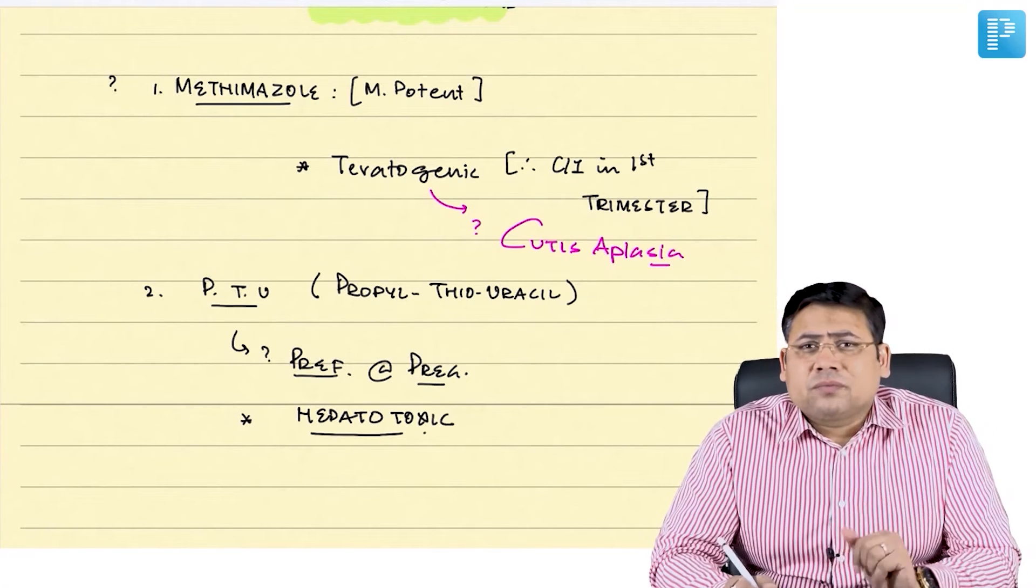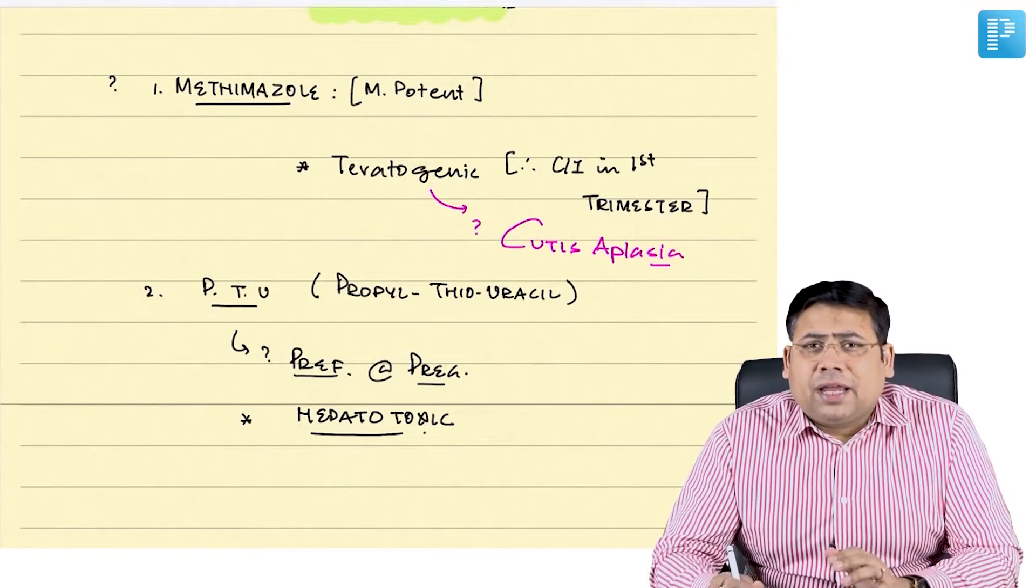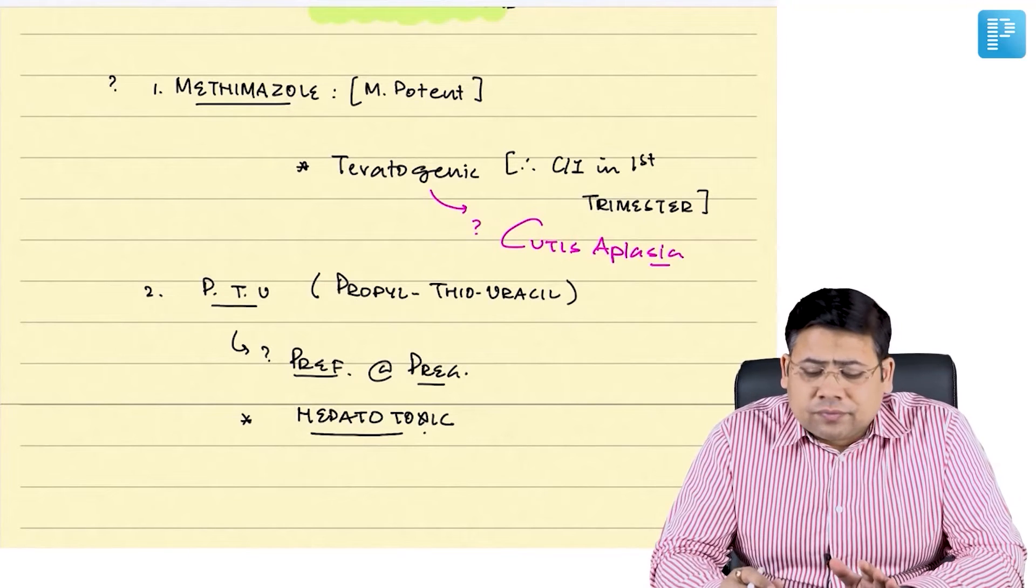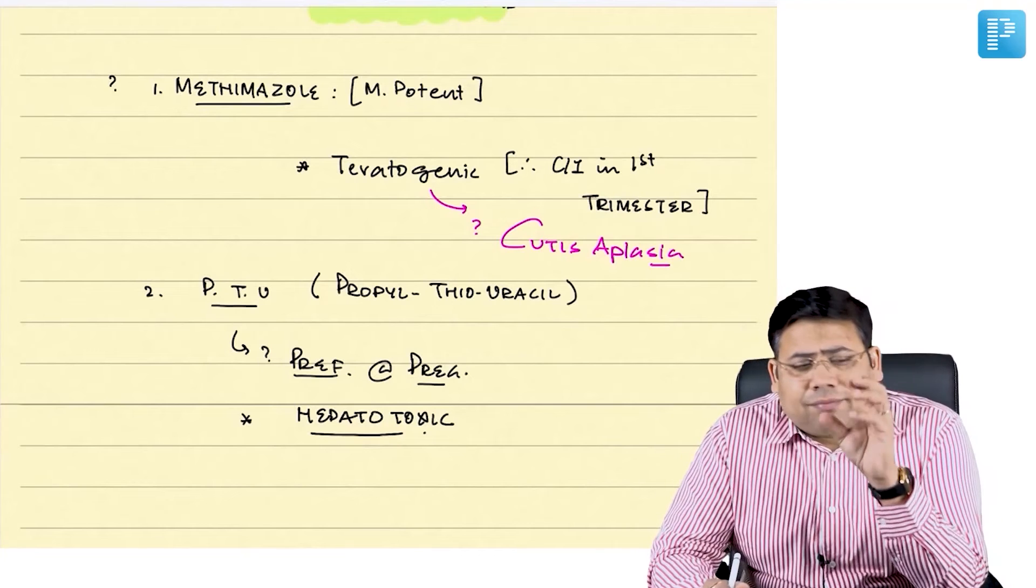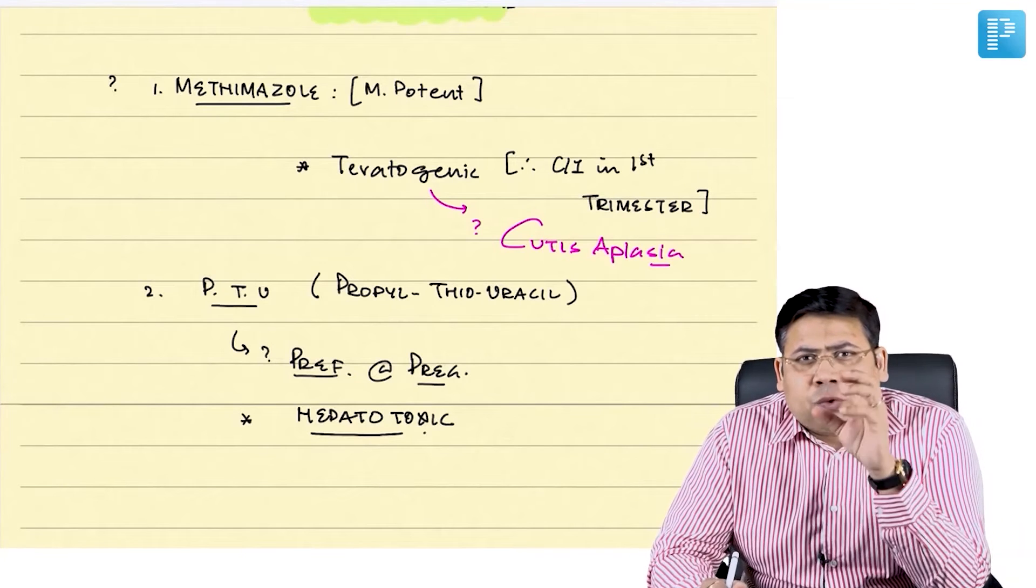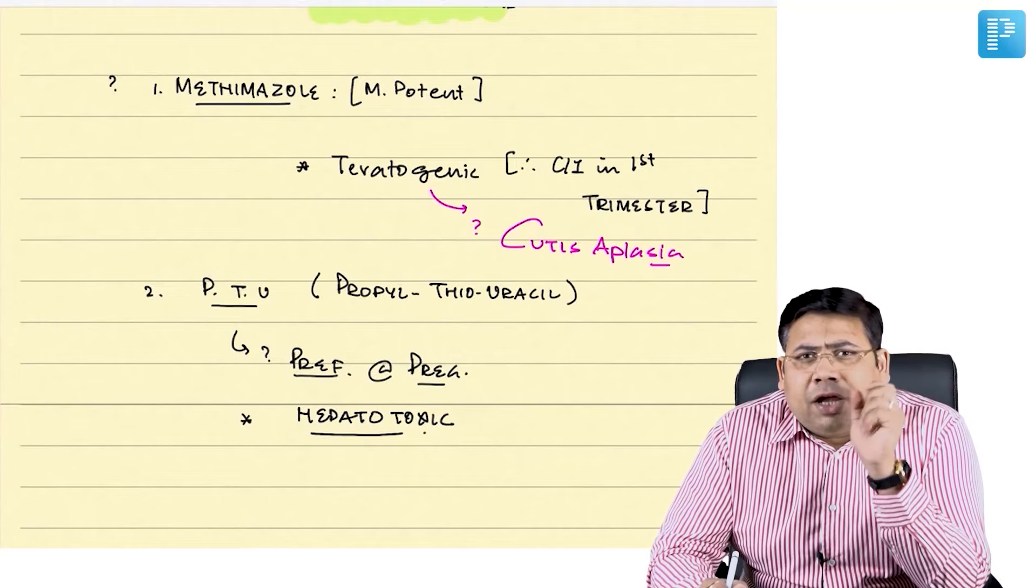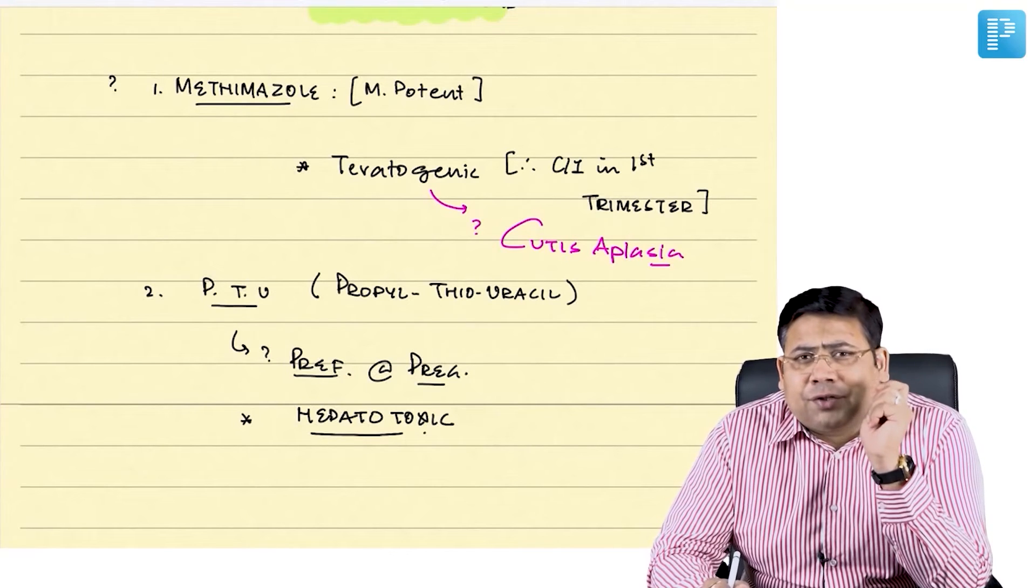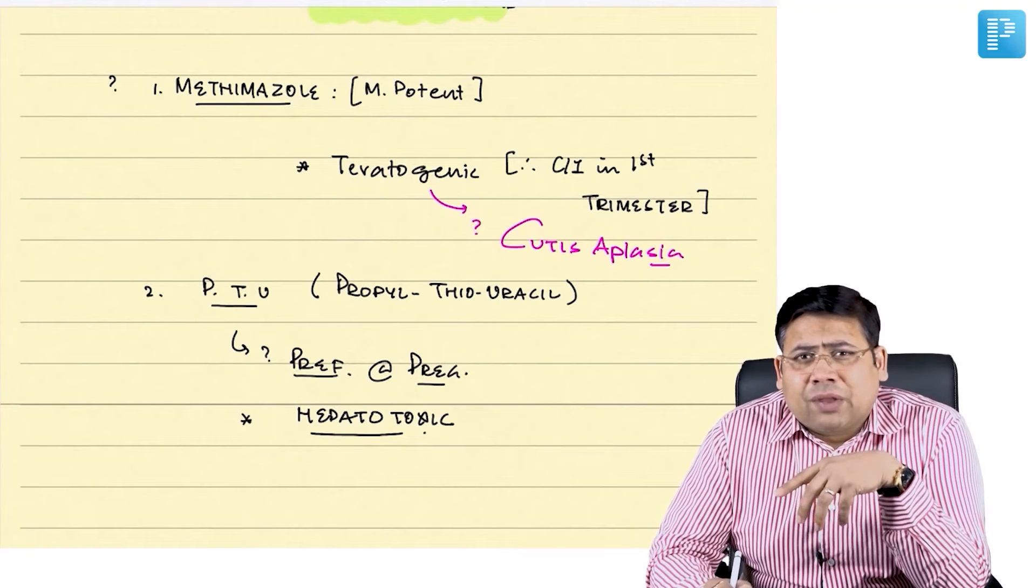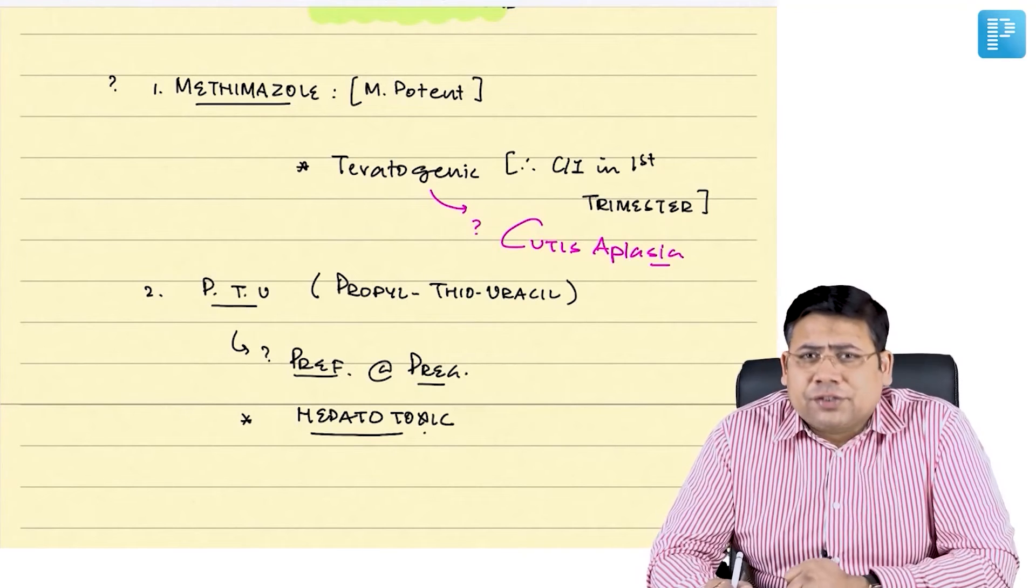Then, regarding dosing, generally it is given as BD or TDS dosing and hence when you have to take something for a long time in TDS dosing, you often tend to miscalculate the drug or miss the drug and you know hyperthyroidism is really dangerous because it is not the mother, it is the fetus also who is endangered now.